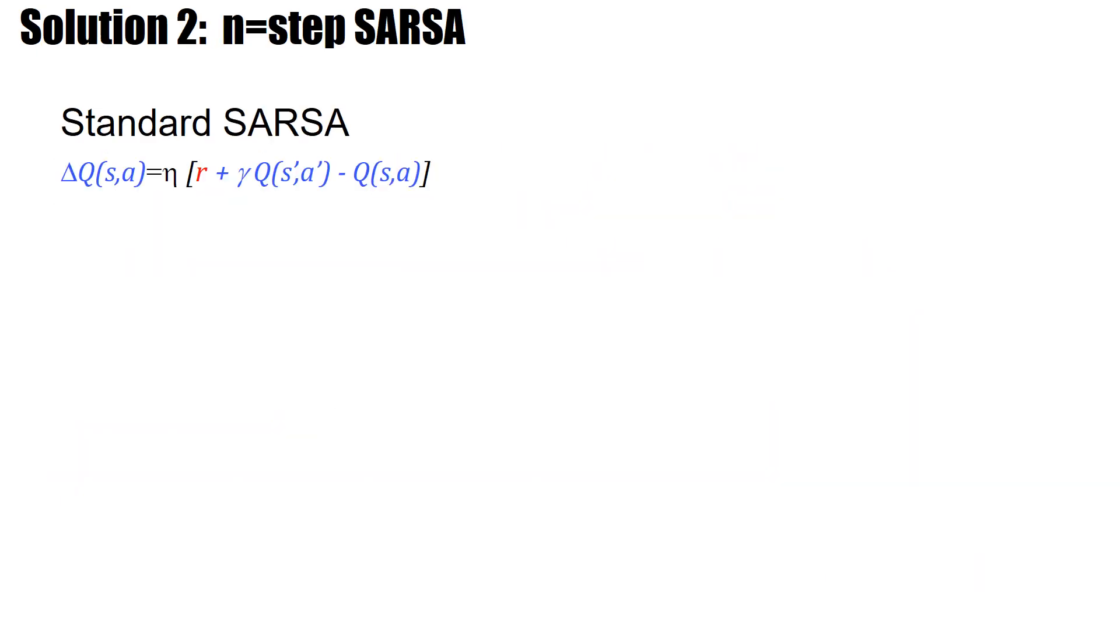Let us recall the framework of standard SARSA. I have an update rule, delta Q, which is the reward, and then you compare the Q values. So what does this mean? This is my way to the goal, discretized. I take my action and I want to update Q of SA.